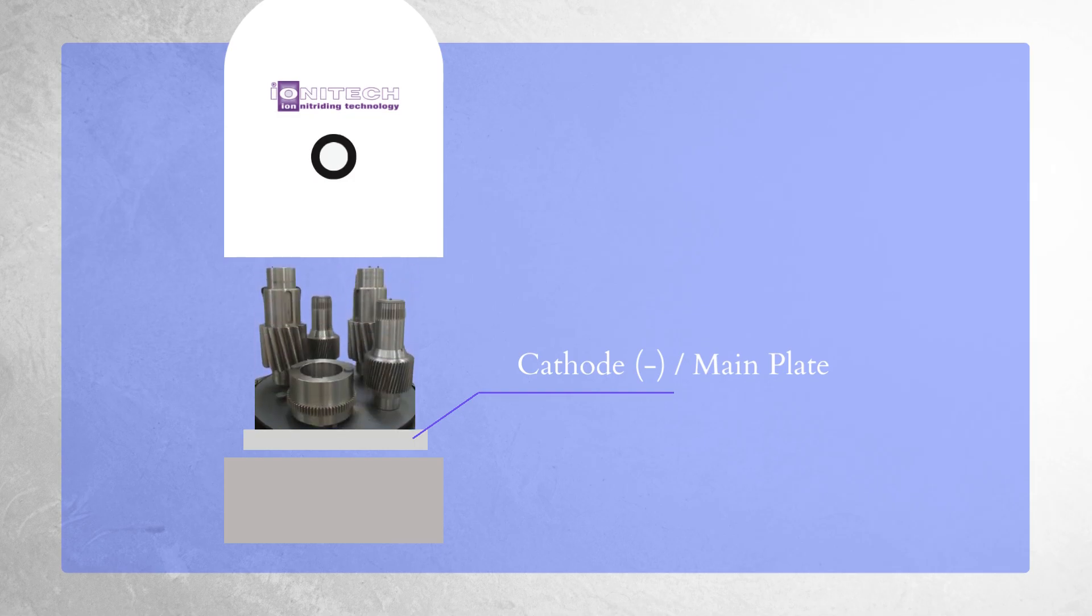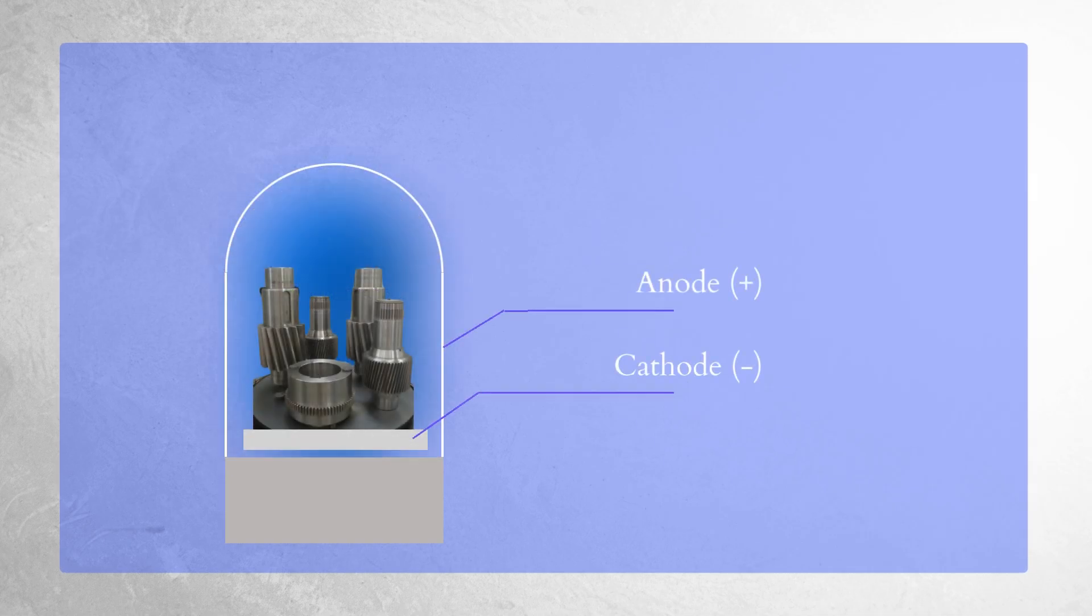Placing the parts that need to be nitrided on the plate makes these parts negatively charged as well. The walls of the chamber, on the other hand, are an anode, positively charged.